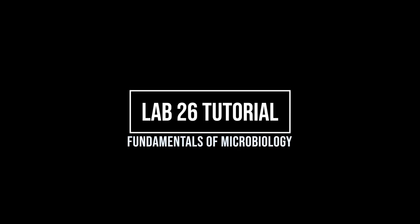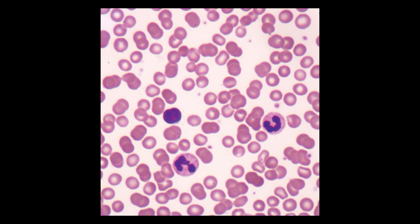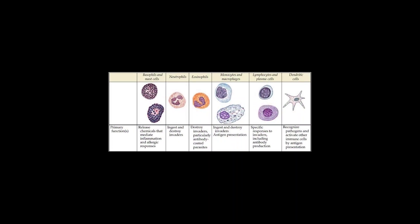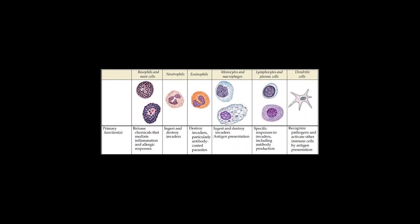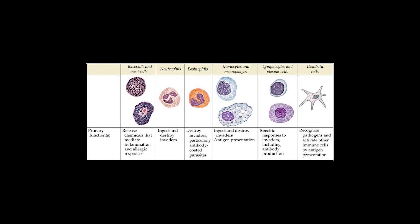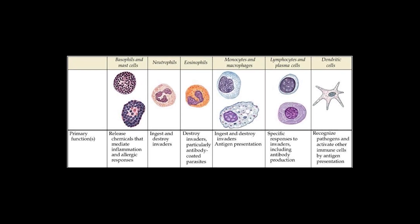Typically in Lab 26, students are given prepared slides of blood and asked to scan those slides and identify the five types of leukocytes that are commonly encountered in the blood. Let's take a look at how to identify various white blood cells, and we'll learn some tricks and tips for being able to distinguish them, because it can be a little bit tricky. At the end, you'll have an opportunity to practice your skill at identifying the various leukocytes.